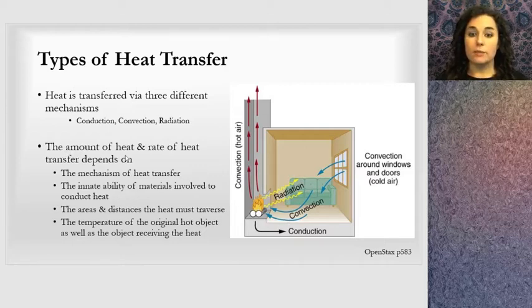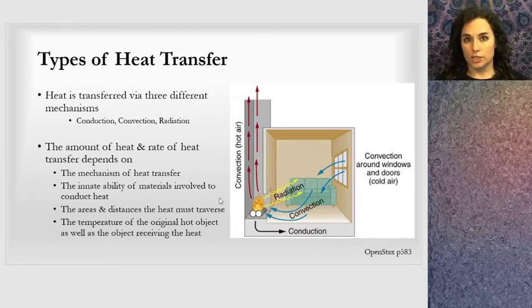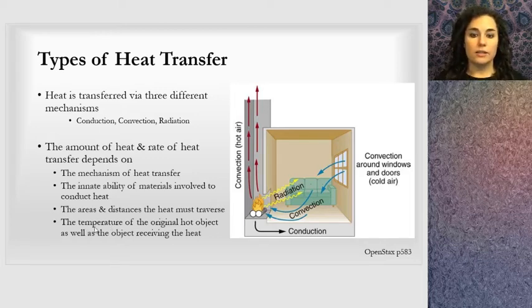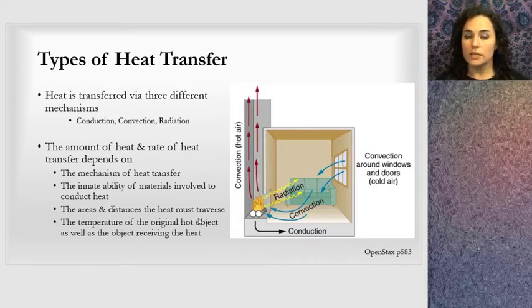What I wanted to talk about is the amount of heat and the rate of heat transfer and what that depends on. The mechanism of heat transfer is going to affect those things, whether it's radiation, convection, or conduction. There's some sort of efficiency involved in each one. There's the innate ability of materials to conduct heat, the areas and distances the heat must traverse, and the temperature of the original hot object as well as the receiving object, how long it takes to achieve thermal equilibrium. It may take a little bit of heat transfer to balance them, or it may take a lot.